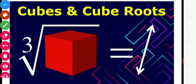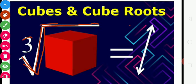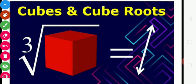Any number, if we multiply it three times, then we get a Cube. This is the symbol of Cube. The Cube Root symbol is like a square root symbol but with a 3 written in it. So we can say that it is a Cube Root.